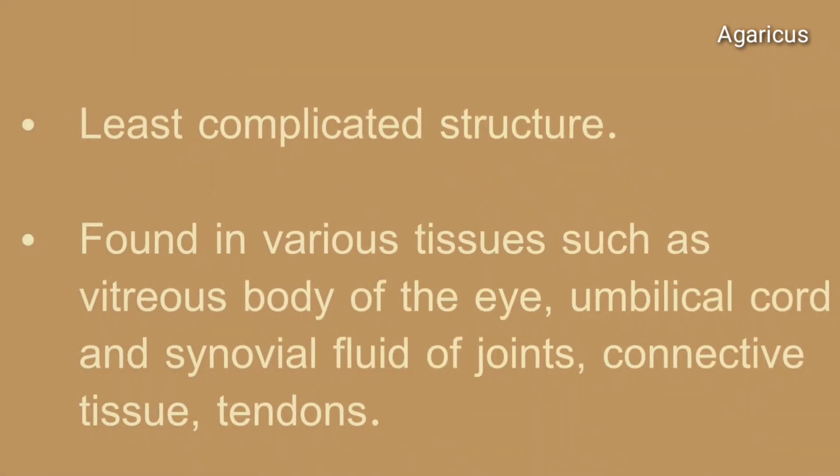Hyaluronic acid has the least complicated structure. It is formed in various tissues such as the vitreous body of the eye, umbilical cord, synovial fluid of joints, connective tissue, and tendons.